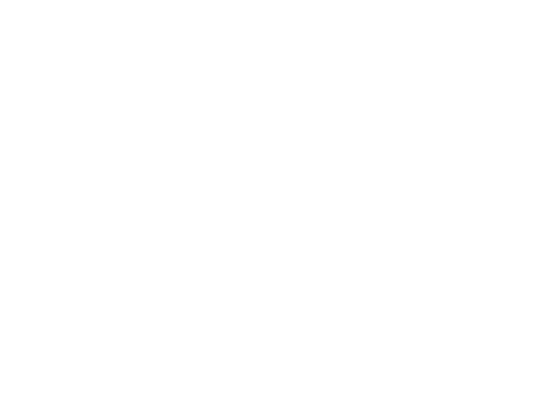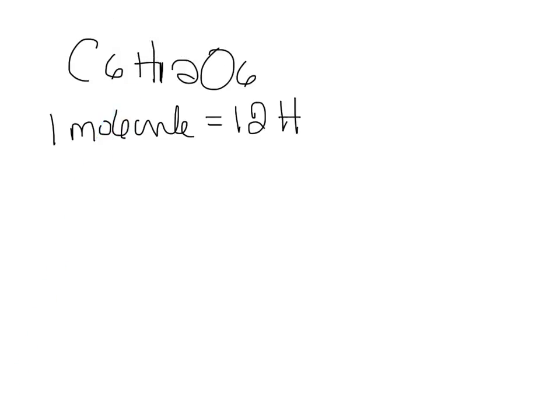Alright. So we're going to do the second part of the question now. And it asked us how many hydrogens were in the original sample. So in the compound C6H12O6, for every one molecule, we have 12 hydrogens. So, we already calculated that there is 1.26 times 10 to the 25 molecules.